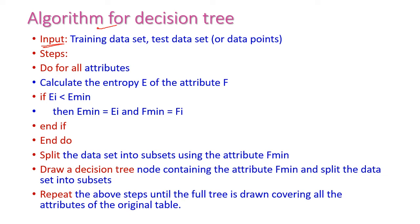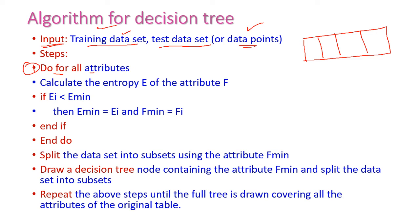The decision tree algorithm takes as input the training dataset and the test dataset or a single data point. The first step is: for all attributes in the training dataset — feature 1, feature 2, feature 3, feature 4, also called attributes or features — calculate the entropy of each attribute.